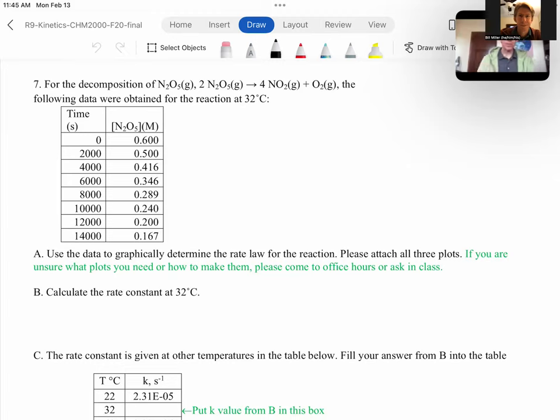Now, A says use the data to graphically determine the rate law for the reaction. Please attach all three plots. And by this, it could be one plot with three lines on it, or it could be three separate plots. But in order to determine the rate law using plots, you have to do first one plot of concentration versus time. And then you have to do another plot of natural logarithm of concentration versus time.